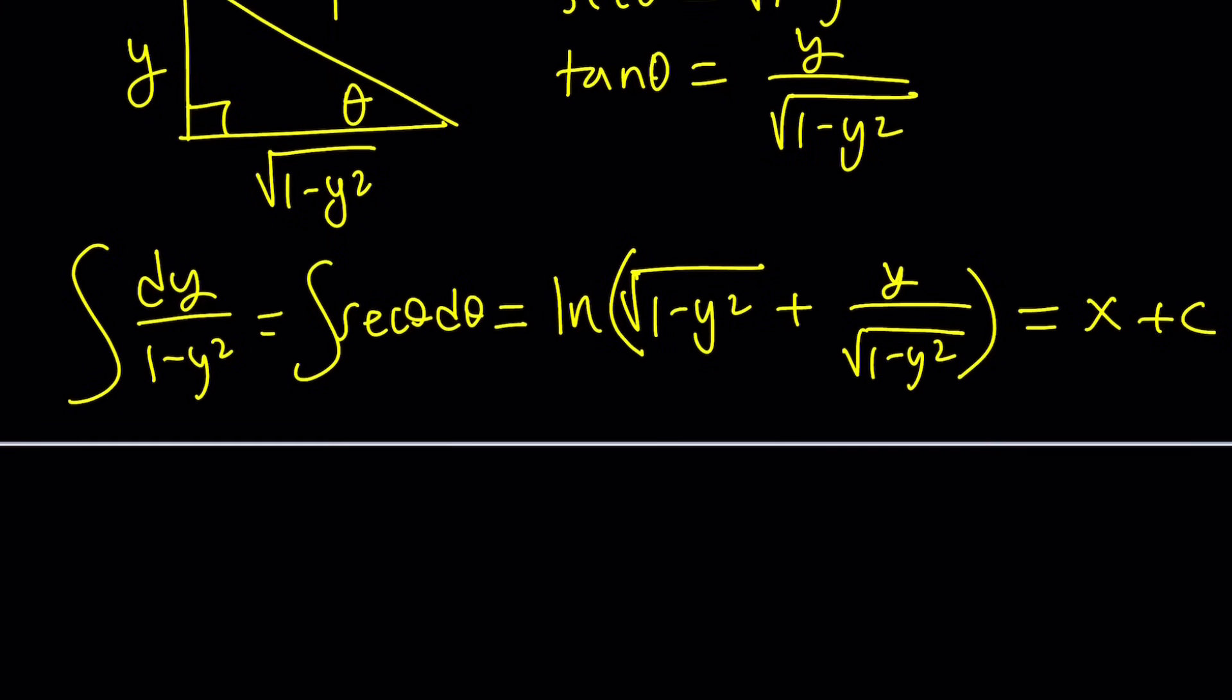But can we make it nicer? Probably. First of all, you can make a common denominator, even though it's no big deal. That's going to give us 1 minus y squared plus y over, because when we multiply these, the radical disappears, and then we get the square root of 1 minus y squared. This is ln, and then that's equal to x plus c.